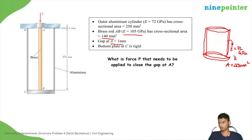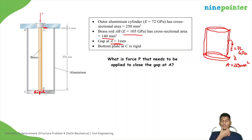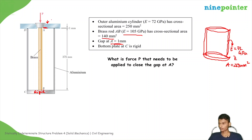There is a gap at A of 1 mm. The bottom plate at C is rigid, so it won't undergo any deformations. The question asks: what is the force T that needs to be applied to close the gap at A? This means we need to move the brass rod downwards effectively by 1 mm.